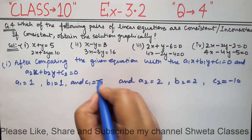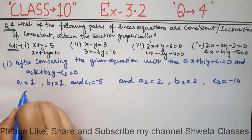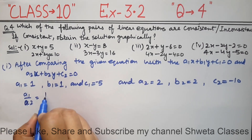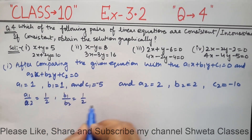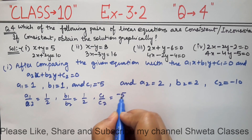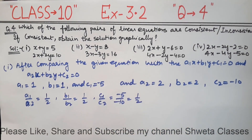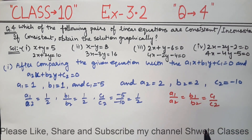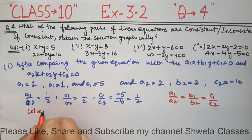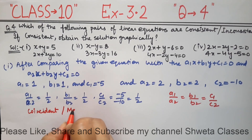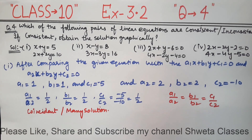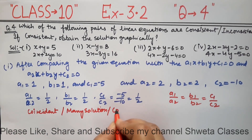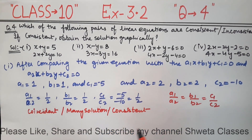Since a1/a2 = b1/b2 = c1/c2, the lines are coincident. This means there are infinitely many solutions. When there are infinitely many solutions, the system is consistent. Remember: both unique solution and infinitely many solutions cases are consistent.